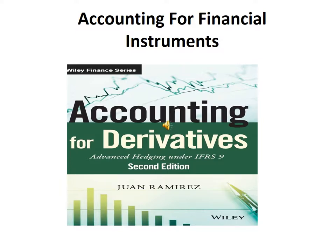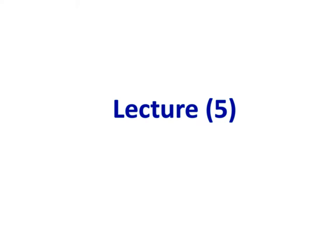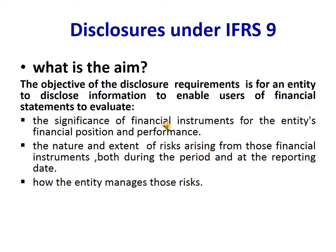Accounting for Financial Instruments. Disclosures under IFRS 9 — what is the aim of this disclosure? The objective of the disclosure requirements is for an entity to disclose information to enable users of financial statements to evaluate: 1. The significance of financial instruments for the entity's financial position and performance.